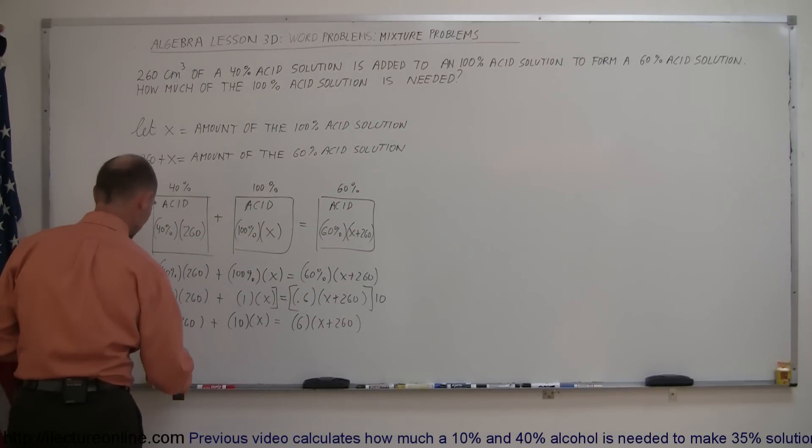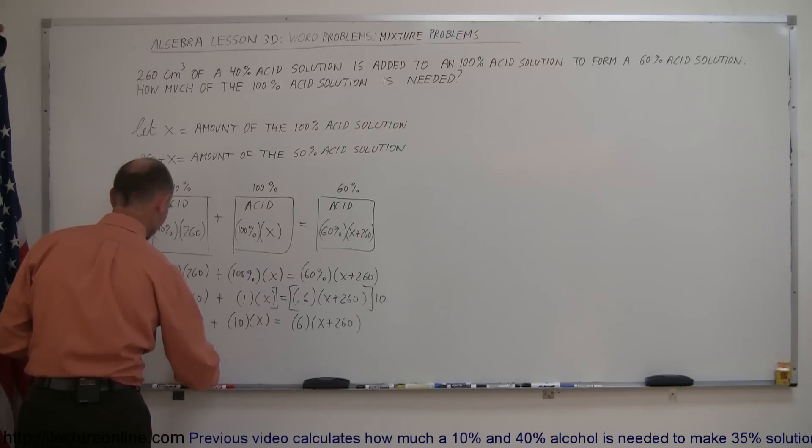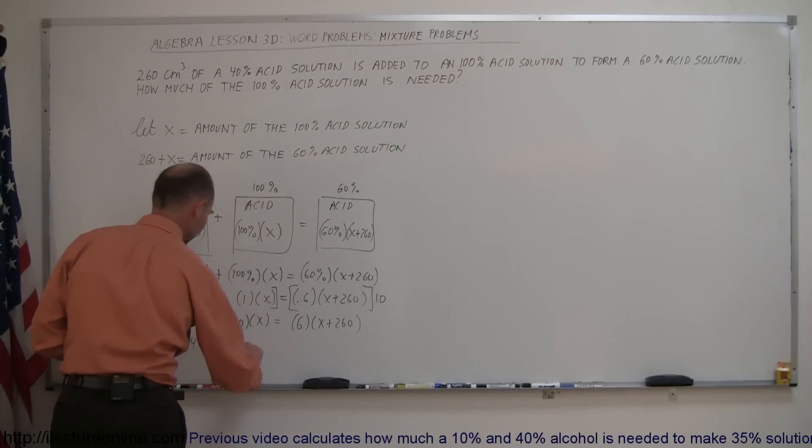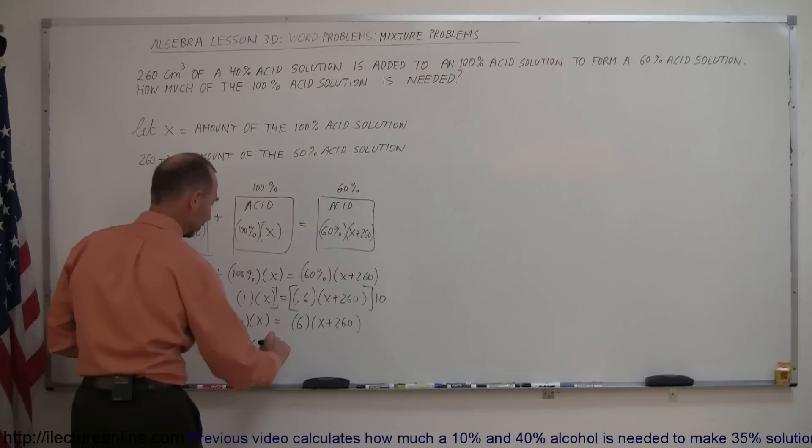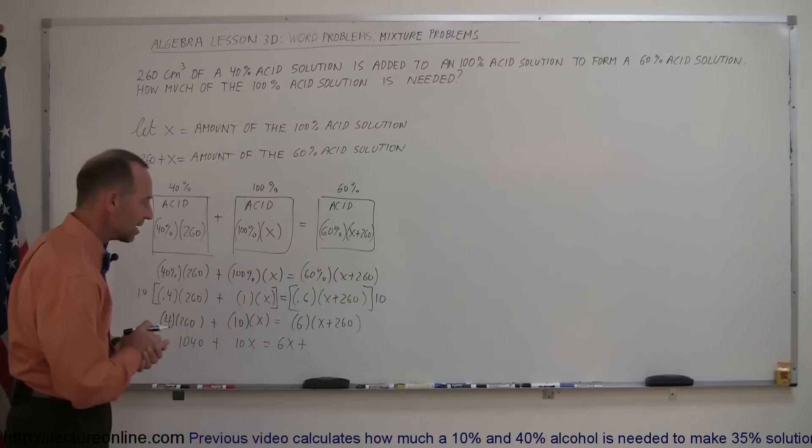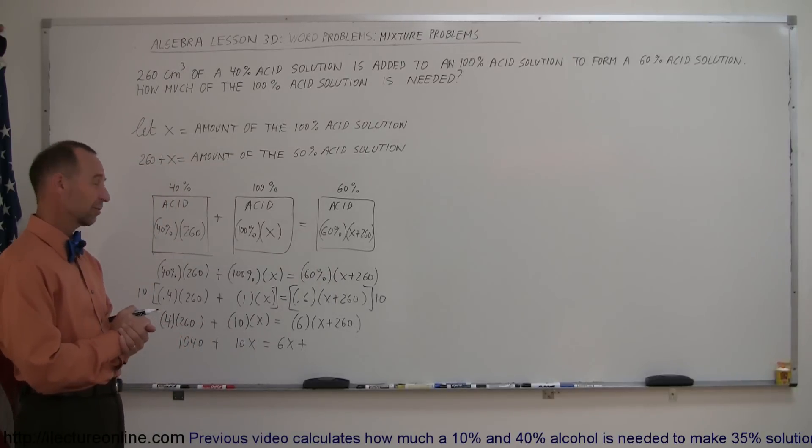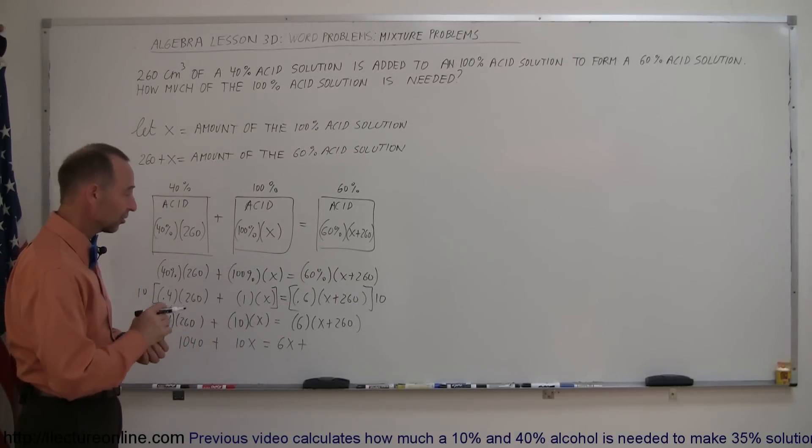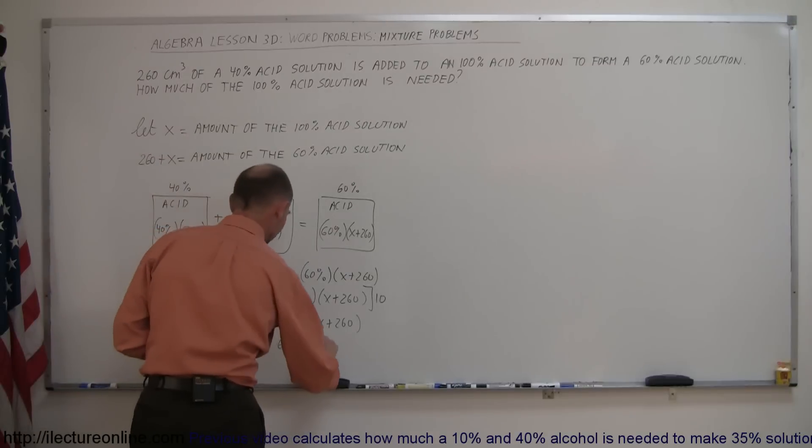And now we can go ahead and multiply everything through to get rid of the parentheses. So 4 times 260, that's 1,040, plus 10X, equals 6X, plus, and 6 times 260, well, 6 times 250 is 1,500, so to add another 6 times 10, that's 1,560.